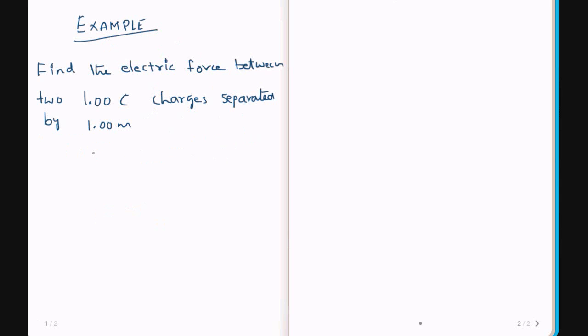Now, let us see a simple example to find the force between two point charges, each one Coulomb, separated by a distance of one meter. From the formula, Q1 is equal to Q2, and the distance R is one meter. From the formula, F equals one divided by four pi epsilon zero, Q1 Q2 divided by R squared.